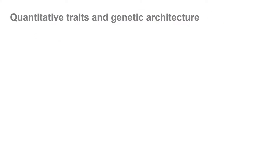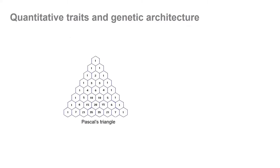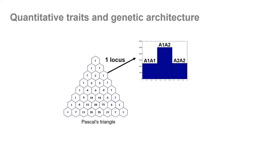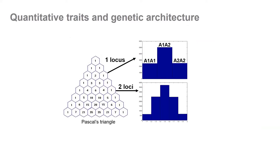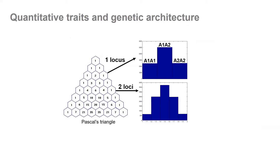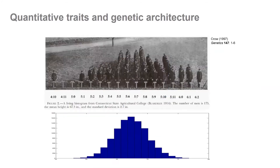Just a very quick introduction to the subject of quantitative traits and genetic architectures. This is Pascal's triangle, which for those fascinated with probability theory will remember has the binomial expansion coefficients — and also gives us the segregation patterns for a trait controlled by a single locus or gene. As a trait is controlled by more and more genes, it starts resembling a normal distribution.